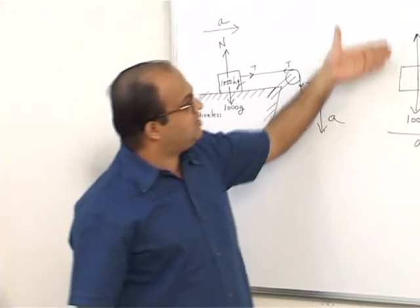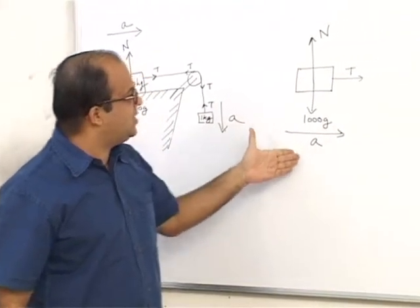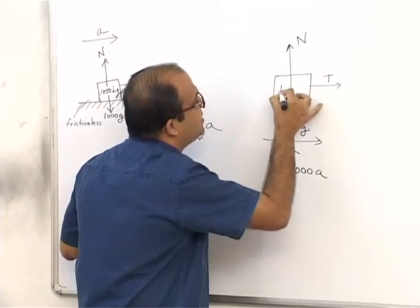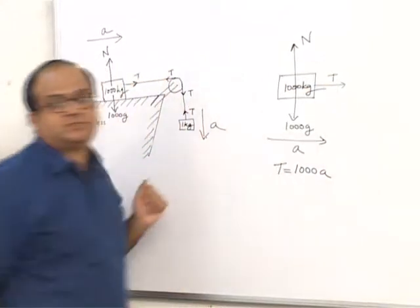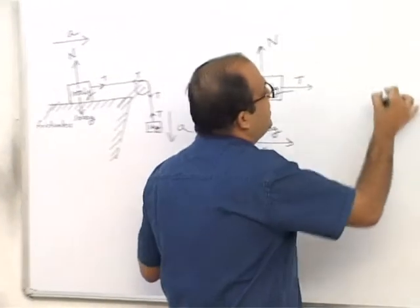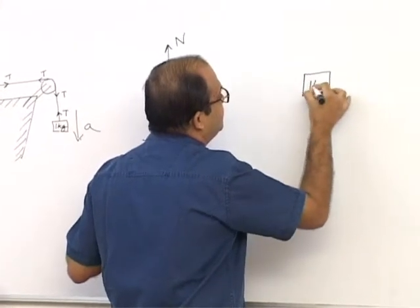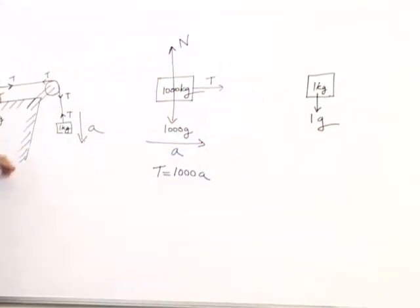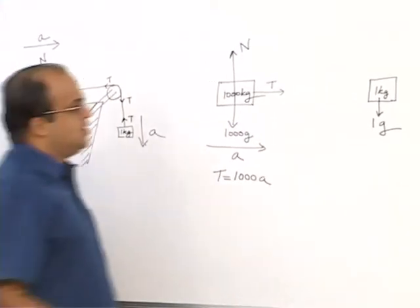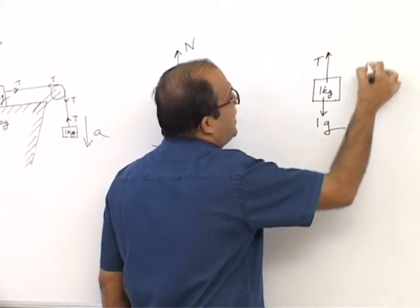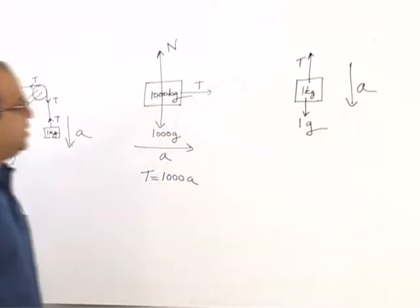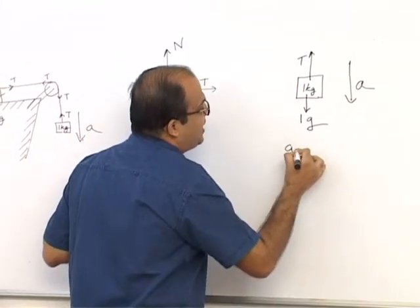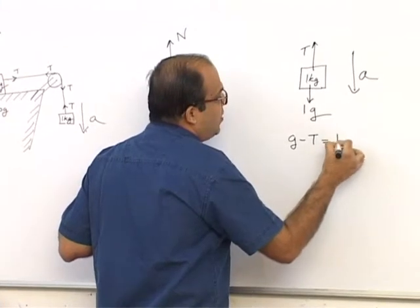Looking at the horizontal forces, tension equals mass times acceleration. So tension equals 1000 times A, where 1000 kg is the mass of this block. Now, for the 1 kg block, the forces acting on it are weight acting vertically downward and tension acting upward along the string, with acceleration in the downward direction. So weight minus tension equals mass times acceleration: g minus T equals 1 times A.